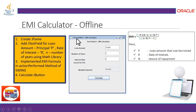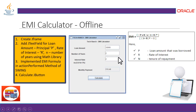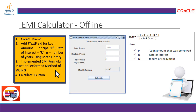The JTextField components are specified by variables that hold the value of P (principal amount), R (rate of interest), and N (number of years). Once these three parameters are entered, the application will calculate and return the monthly payment value. This value is computed using the actionPerformed method, which we override to implement the formula using the Math API.